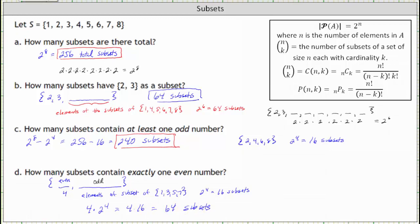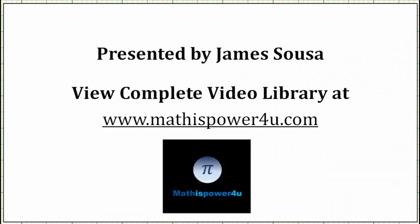Alternatively, think of it as: the first element must be even, and the remaining elements must be odd — which are 1, 3, 5, and 7. For each of those four odd elements, we decide yes or no whether to include them. There are four ways to select one even, giving us four times two times two times two times two, which is also 64 — the same result. I hope you found this helpful. Thank you.